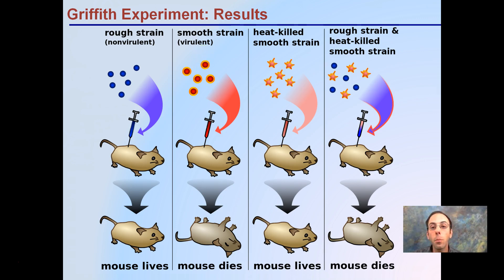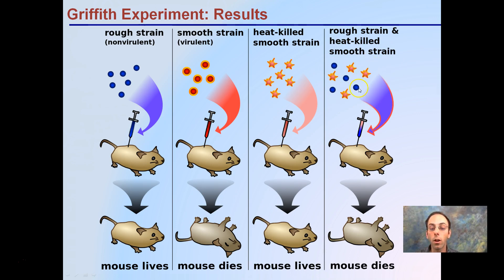What's the potential reason for this? These two different bacteria strains can cause transformation to occur. The genetics from the heat-killed smooth strain still exist and can be transferred and taken up by the rough strain — these two exchange material back and forth. That's the key part causing the mouse to die, producing a virulent end result.